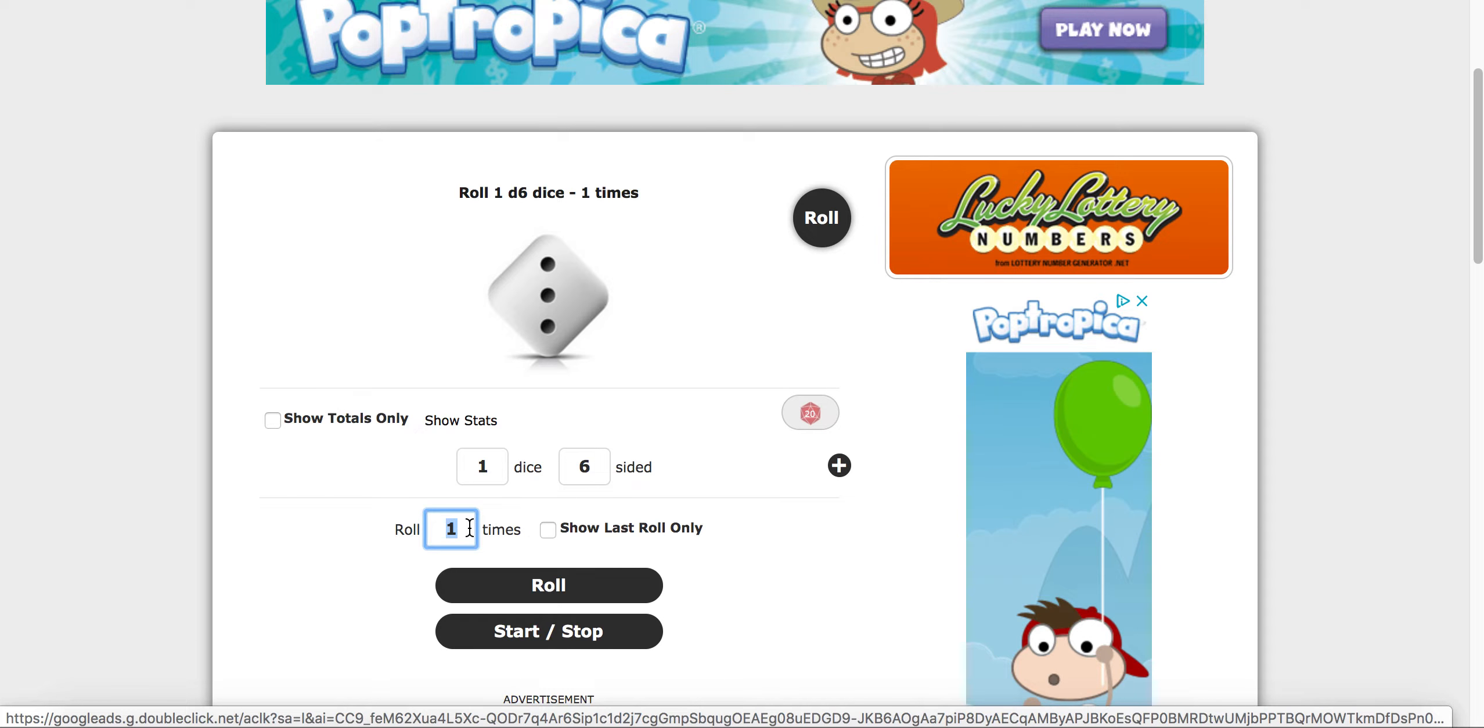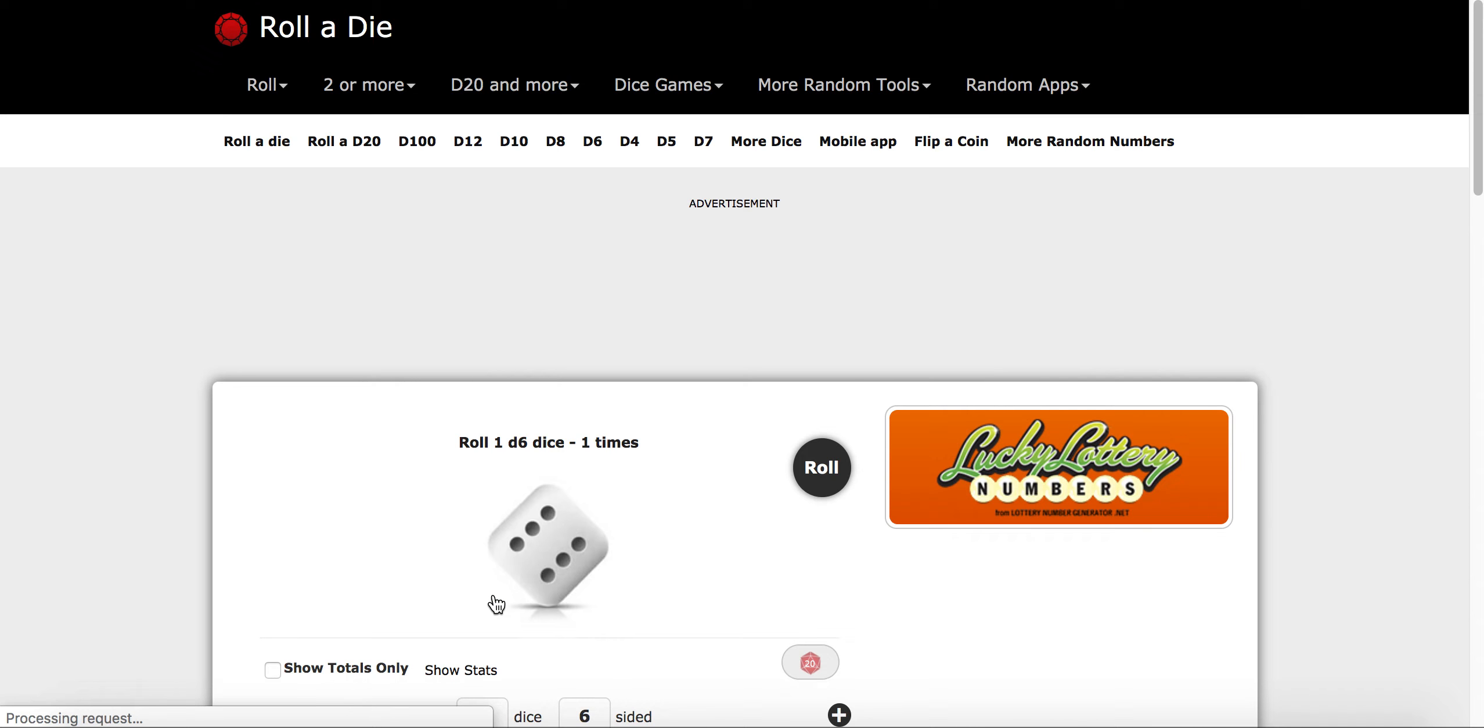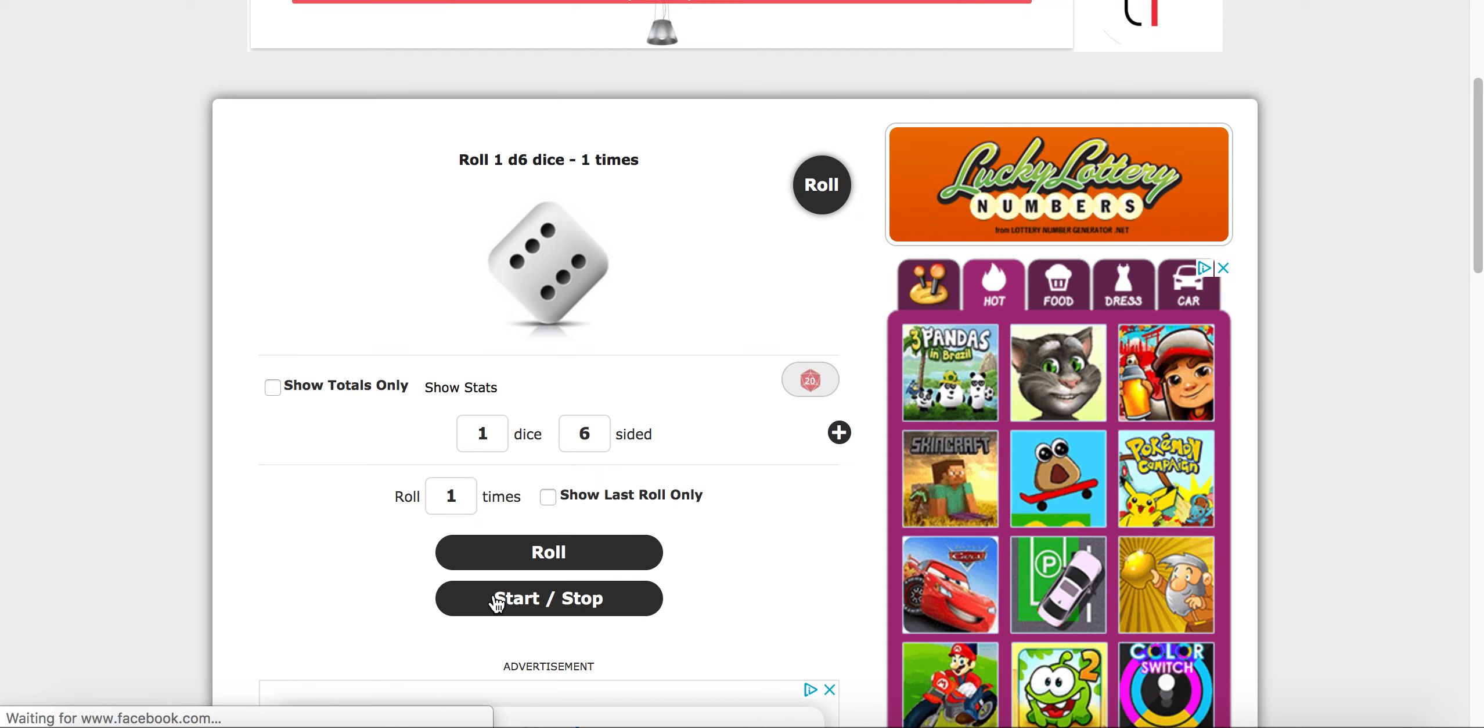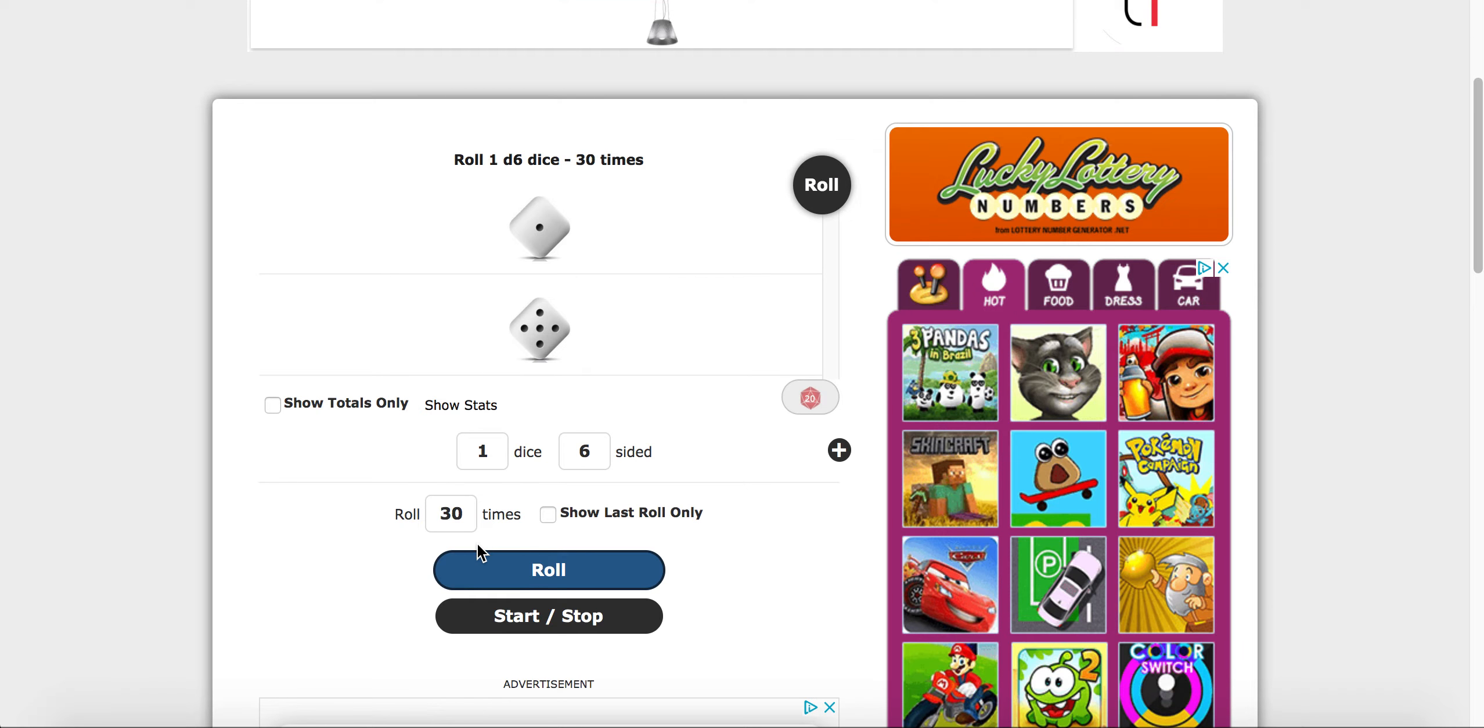On this website, you can also change the number of times that you wish to roll. If you leave it as 1 and roll, it will only roll the dice once and tell you the results of that roll. In this experiment, we want to change it to 30 times and click roll, and it will show you the statistics of what was actually rolled. So you can scroll down and see, and here you'll have to count how many times you rolled each number.